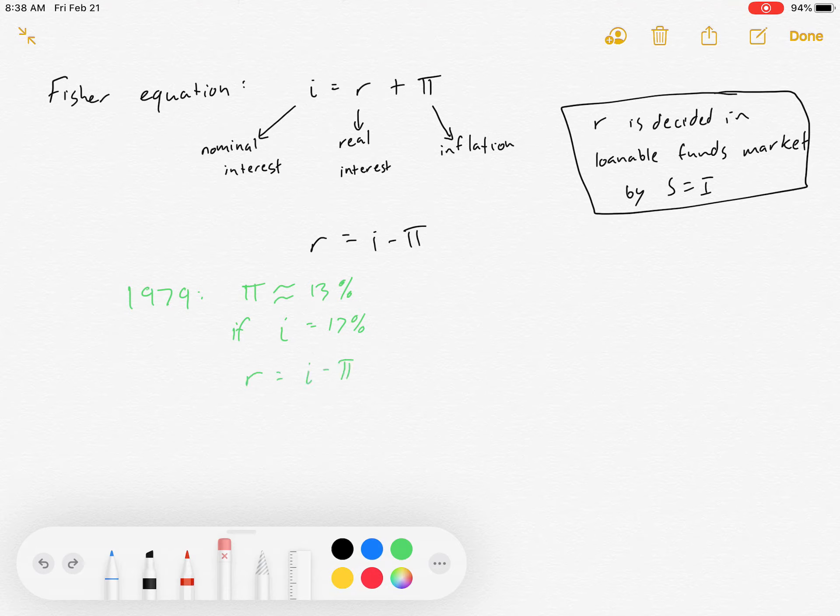Well, the real interest rate, i minus π, is 17 minus 13. It's actually only about 4%. Only 4% of that nominal interest rate is actually real interest. The rest is just accounted for by inflation.